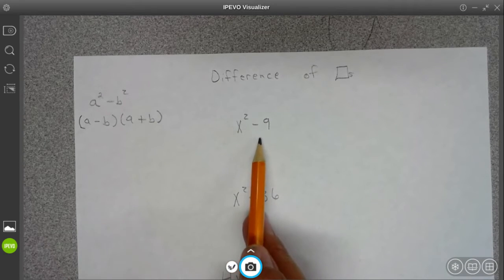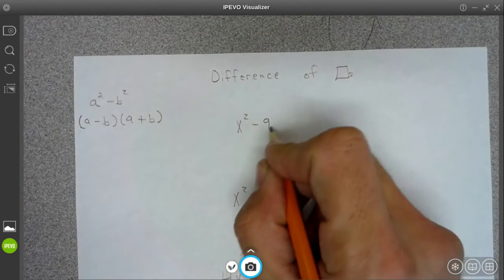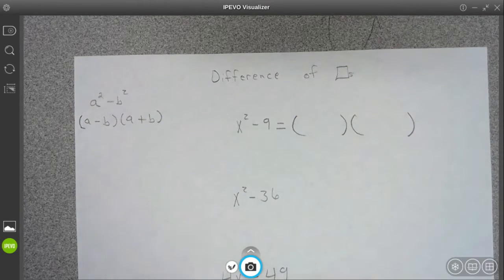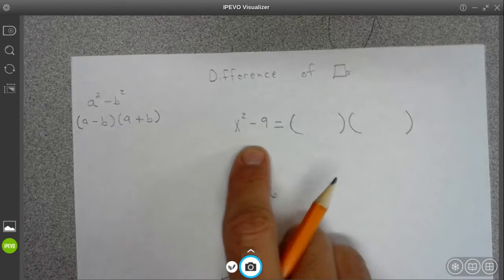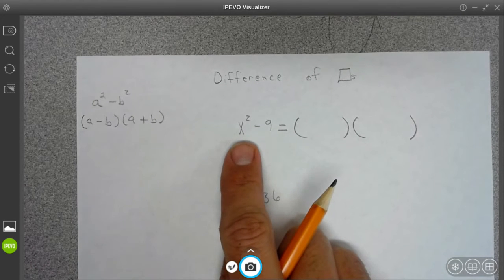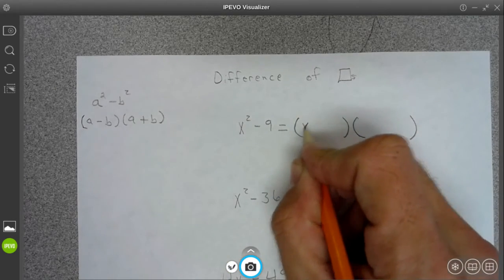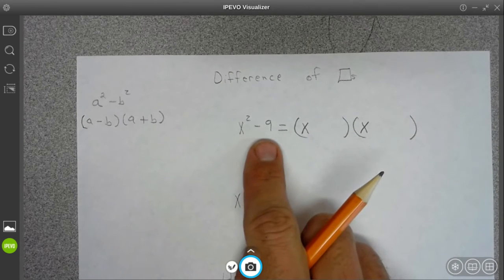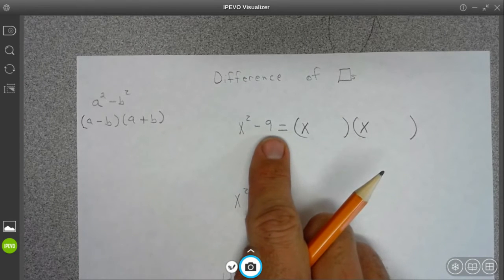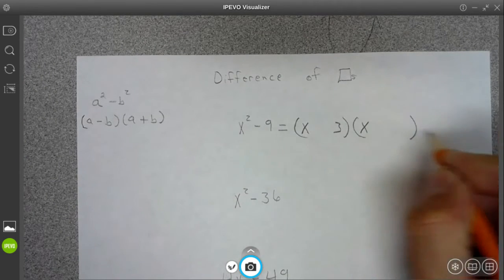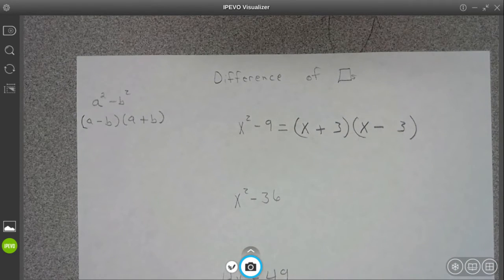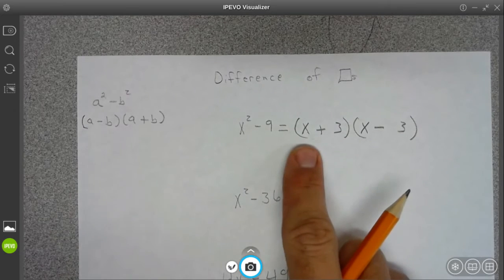For x squared minus nine, if we wanted to factor that, you have to think: what number times itself will give you x squared? That's just x and x. Then what times itself will give you nine? That's three and three. One will be plus, one will be minus - it doesn't matter which one you put where. So the x was like our a.